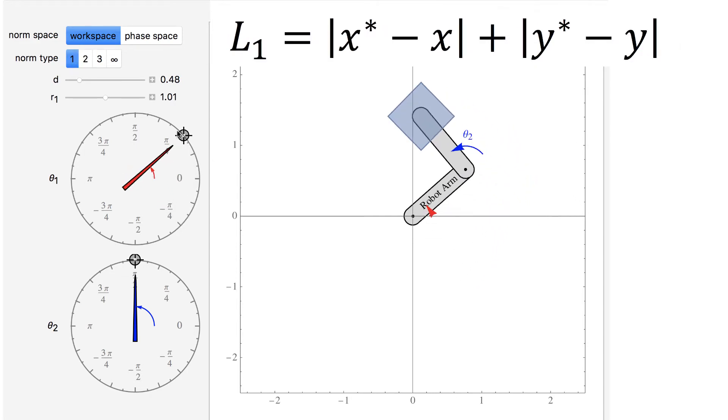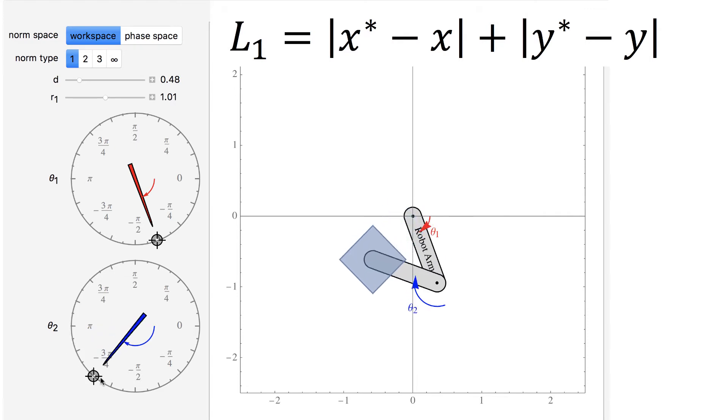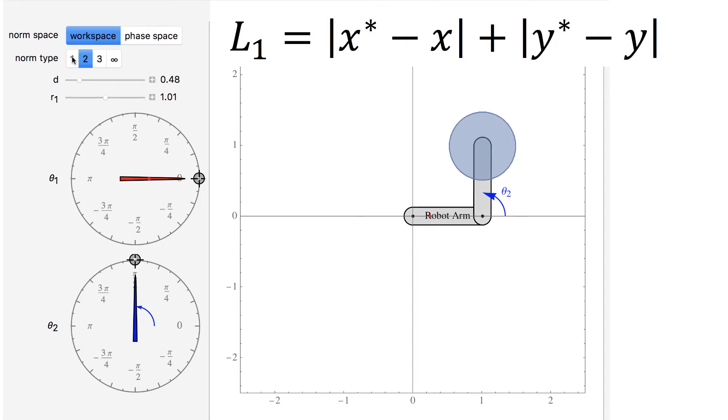The 1-norm is faster to compute because it is calculated by adding up the distance in x and y. This is sometimes called the taxi cab or Manhattan distance, because it is the distance a taxi driver would have to go while staying on a grid of city blocks. The set of points closer than d with a 1-norm is always a square rotated by 45 degrees.